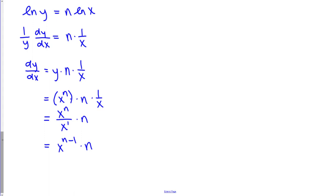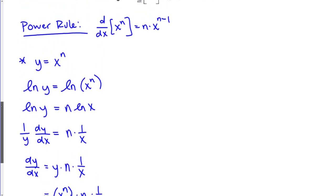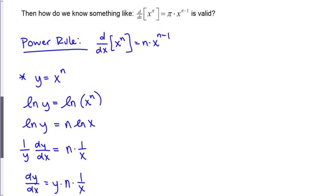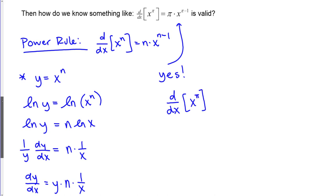So in terms of the earlier question — yes, we can take the derivative with respect to x of x to the pi, and it equals pi times x to the pi minus 1. That's our answer for that derivative.